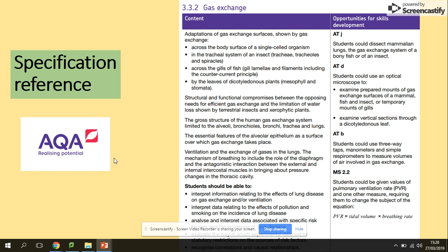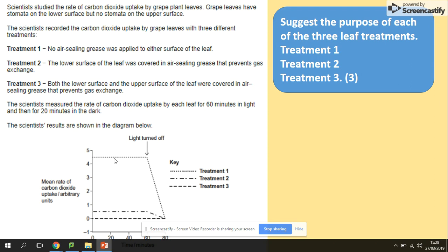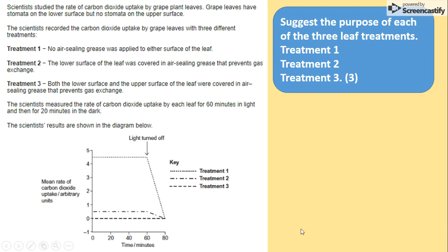So to start with, we've got a past paper question here. We've got a few different treatments. We've got treatment one, two and three. Treatment one: there is no air sealing. Treatment two: we've got the air sealing on the lower surface. And treatment three: both lower and upper surfaces are covered. So just the purpose of each of the treatments here.